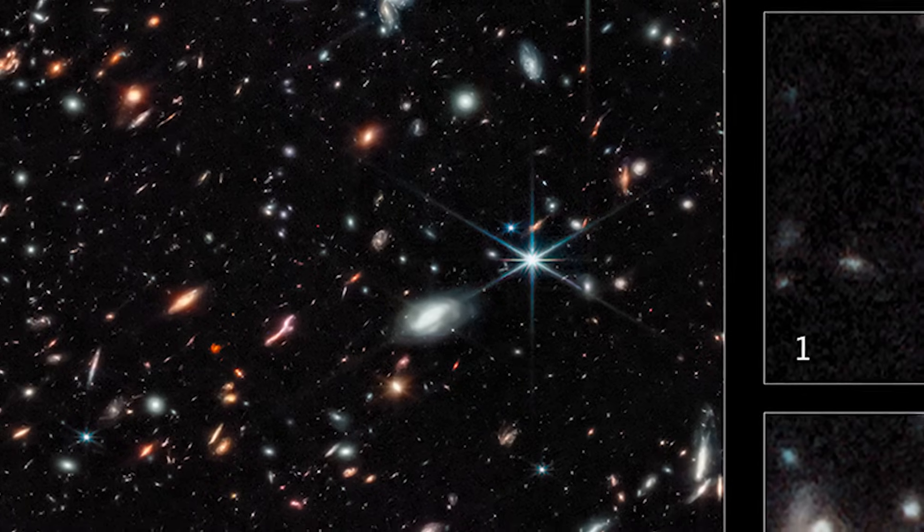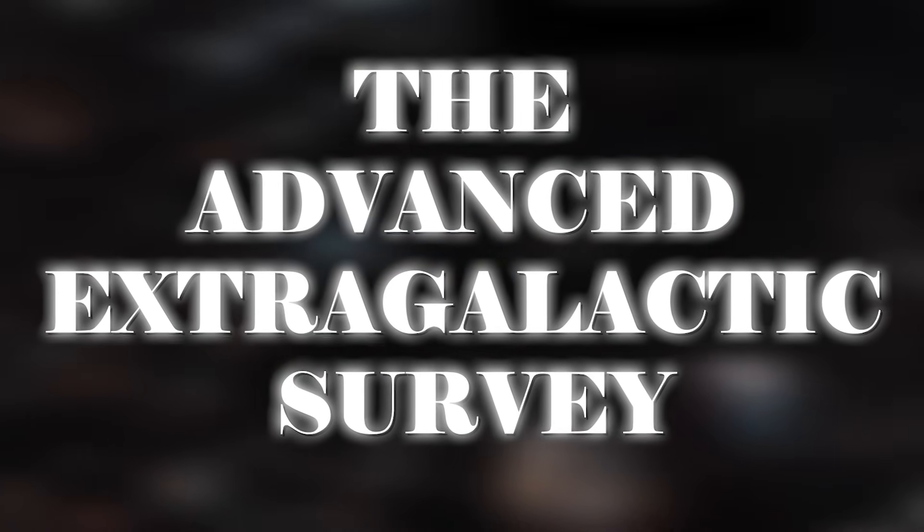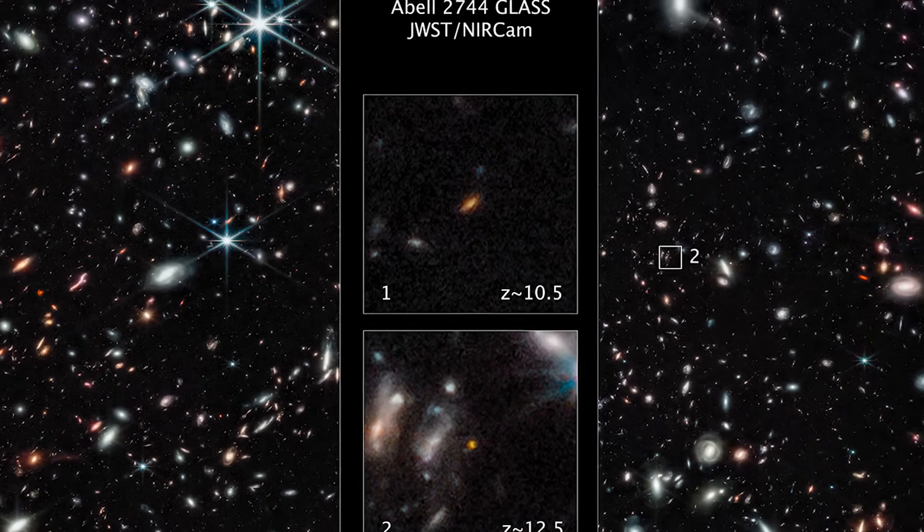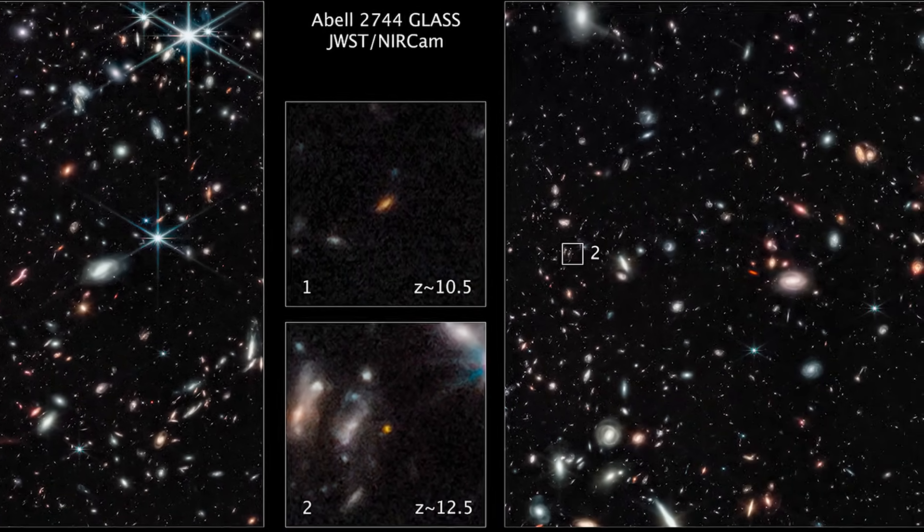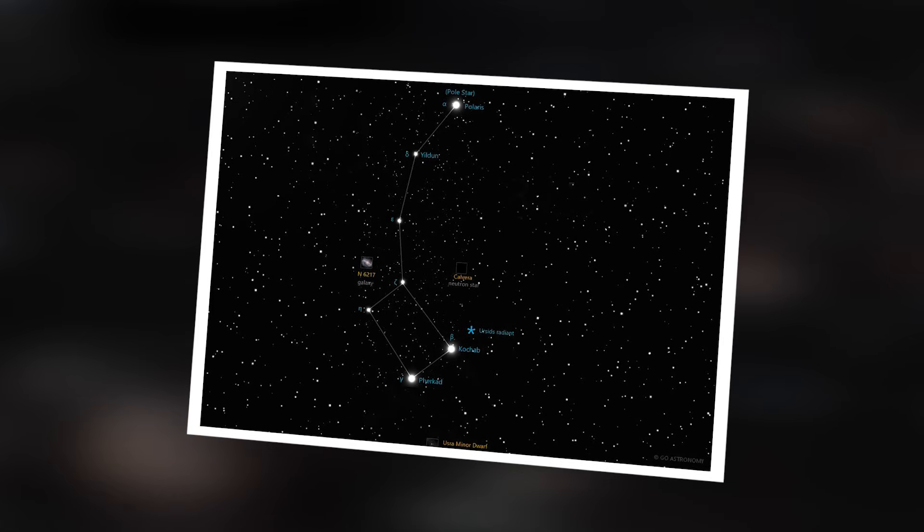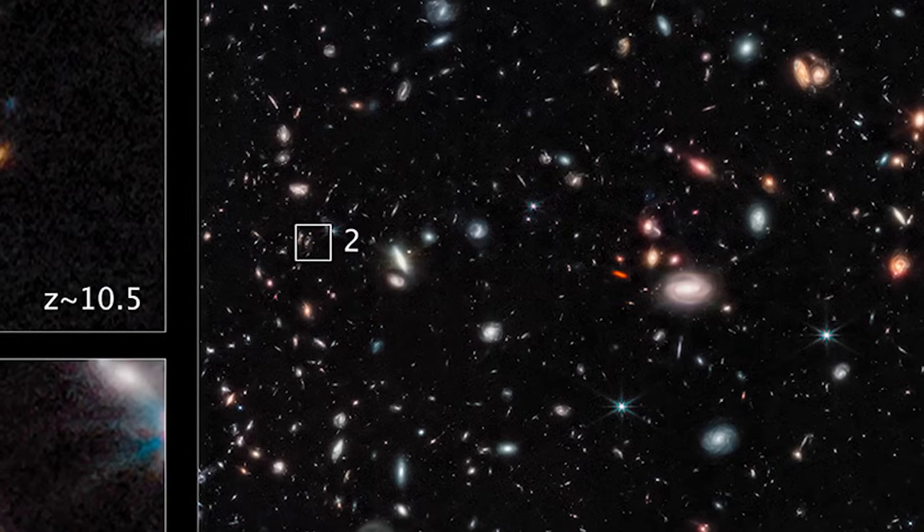These findings are part of an international project called the Advanced Extragalactic Survey, which takes advantage of the James Webb's incredible observational capabilities. Scientists have focused on two relatively small areas of the sky, one pointing toward the constellation Ursa Minor and the other toward the Fornax Cluster. What was found in these two areas is absolutely astonishing.